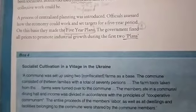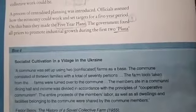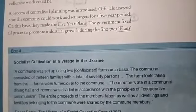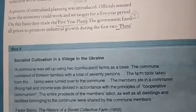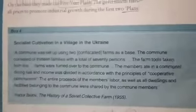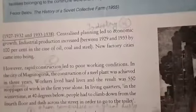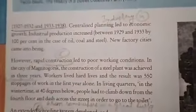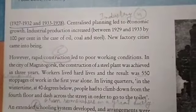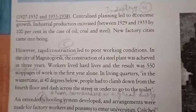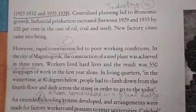They set targets for five years, make funds, and aim for growth. The government fixes everything. The first two five-year plans cover the periods 1927 to 1932 and 1933 to 1938.